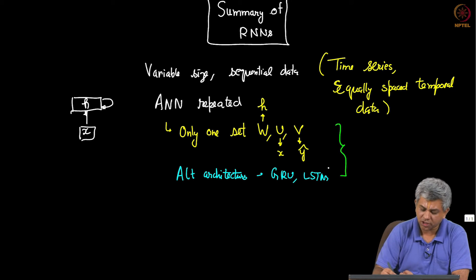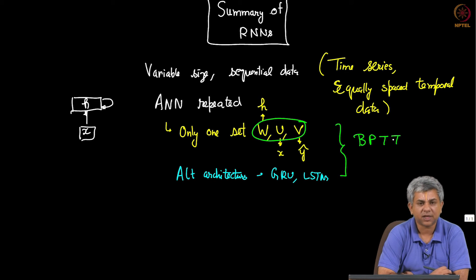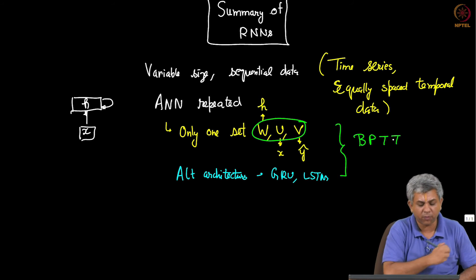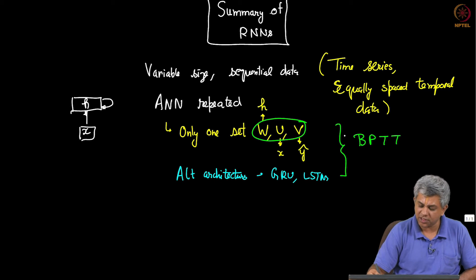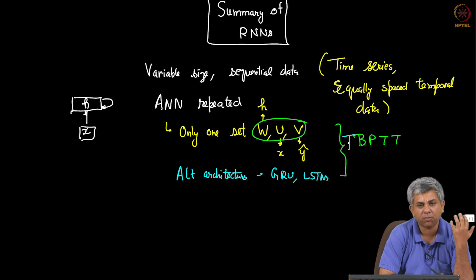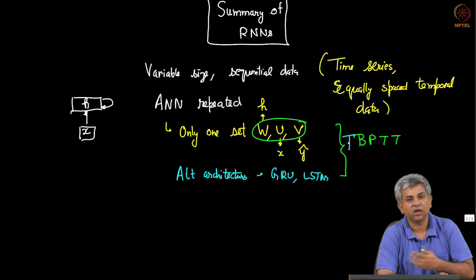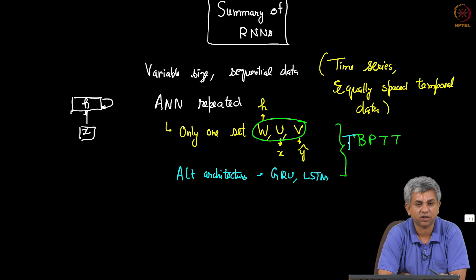We also saw that because this U, V, and W are the same, we use backpropagation through time, and sometimes it can get very expensive because you are just backpropagating through the whole thing, which is why we sometimes do truncated backpropagation through time. In fact, when you have a large number of sequential steps, you can use truncated backpropagation through time.